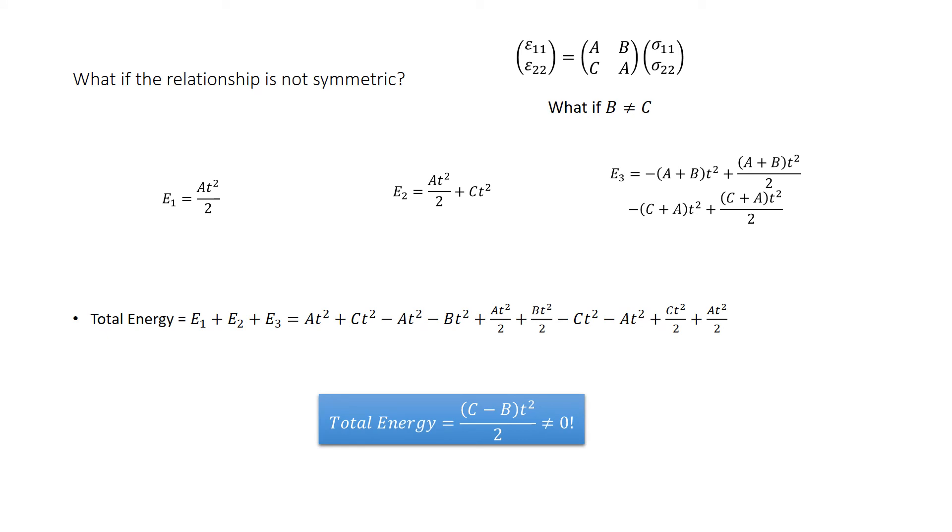The total energy is equal to the sum of the energies that cause the transition from each stage to the next. It turns out that the total energy is equal to a term that is a function of the difference between c and b. The total energy is equal to c minus b t squared over 2. If c is not equal to b, this is not equal to 0.